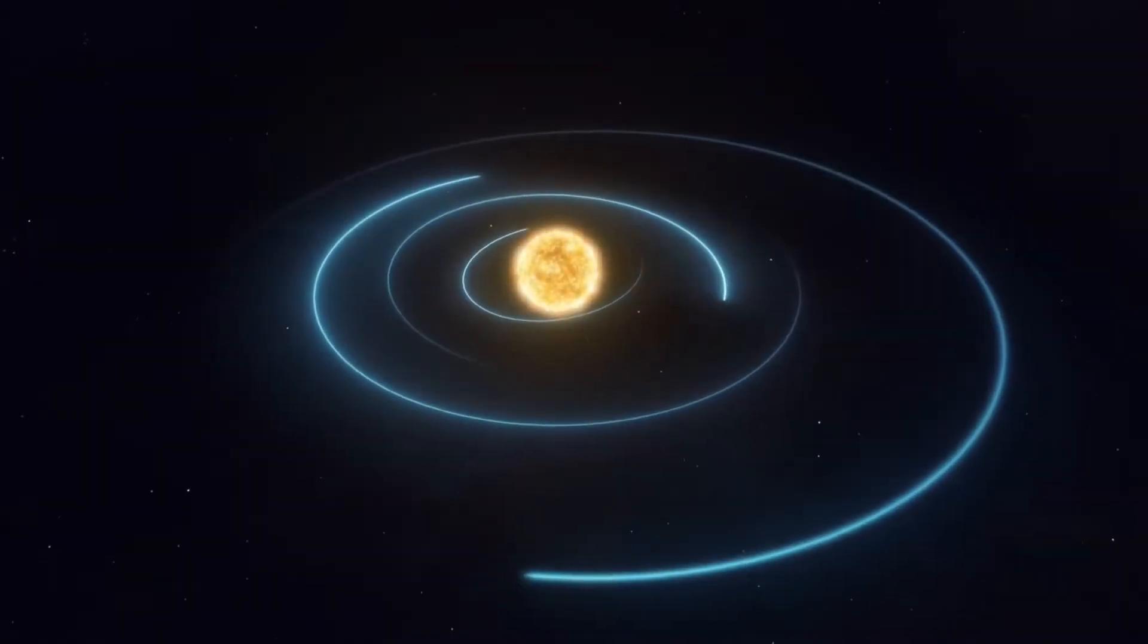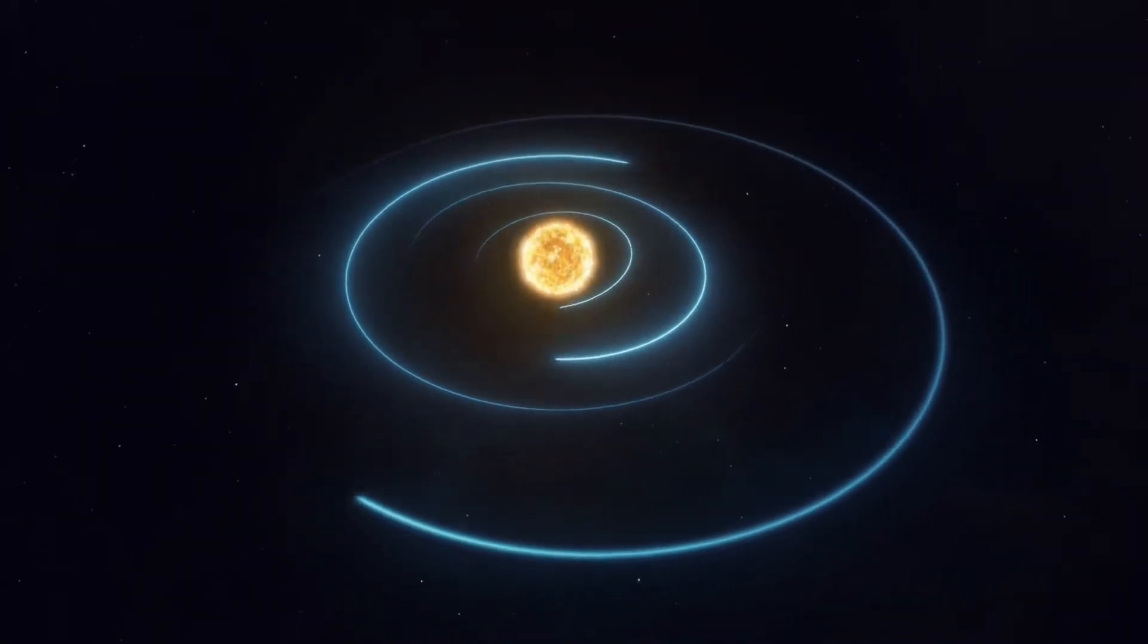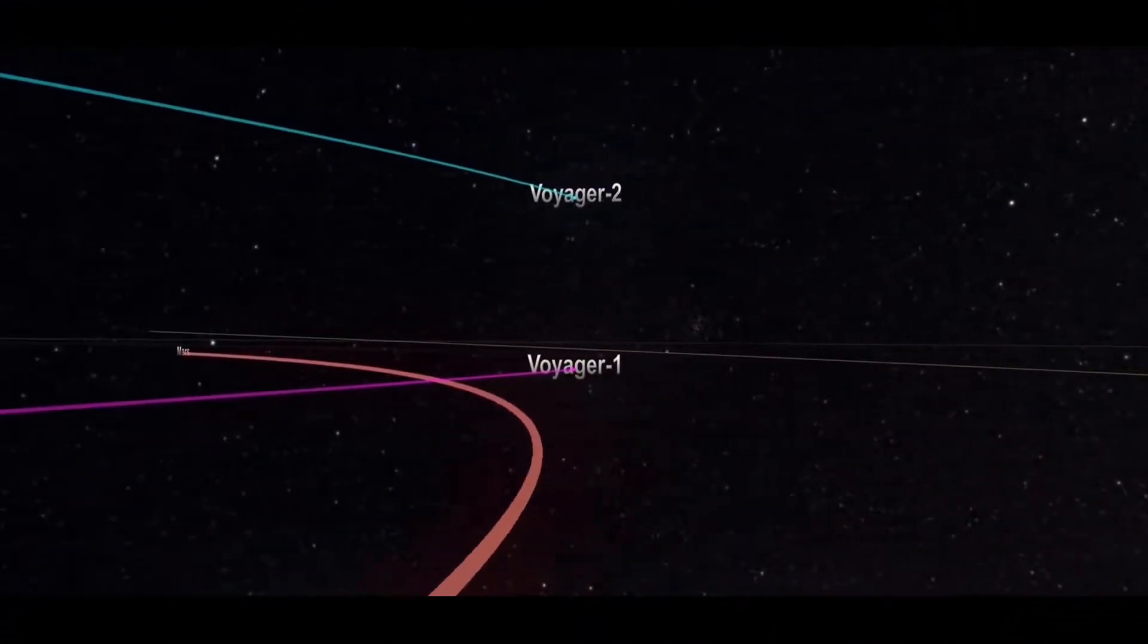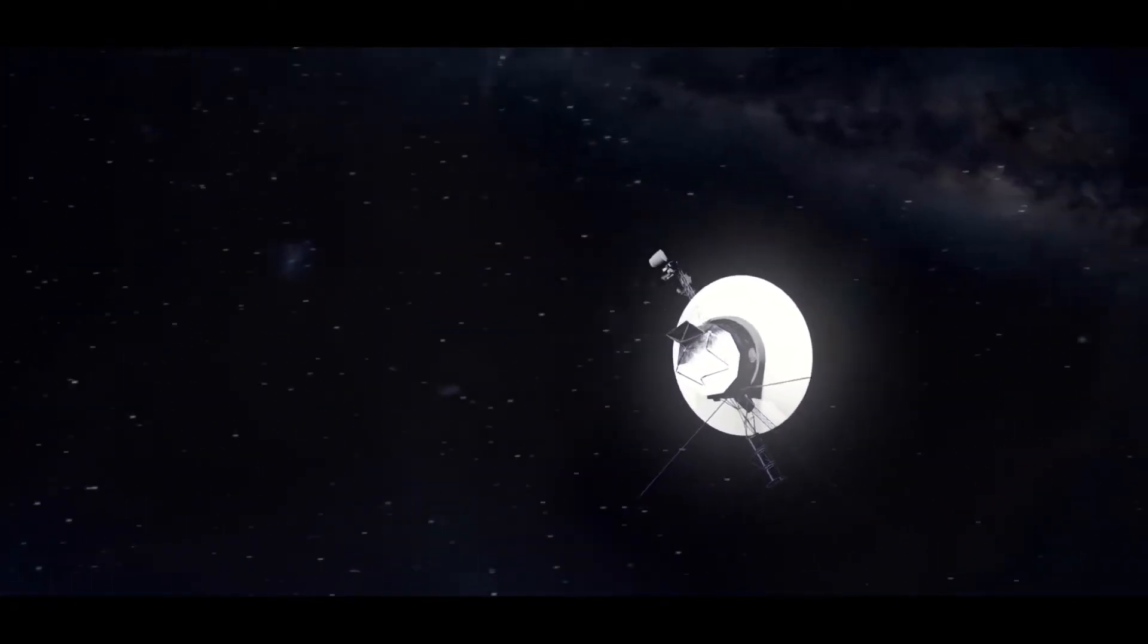We are sure you must have heard about the world-famous Voyager. In case you haven't, and that is why you clicked on this video, Voyager 1 and 2 is an American scientific program that employs two robotic interstellar probes. Two of these were launched, Voyager 1 and 2.